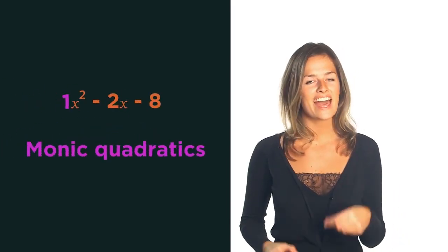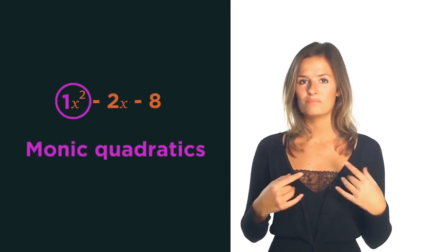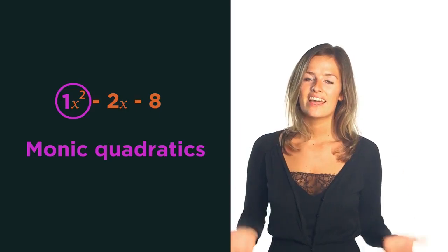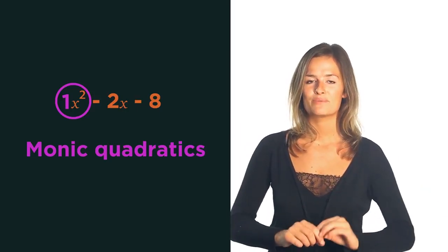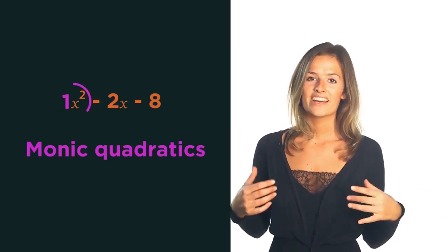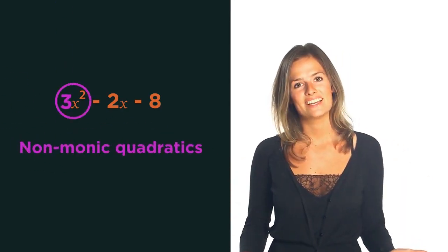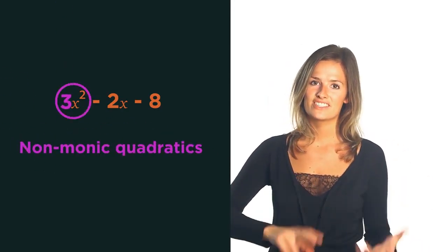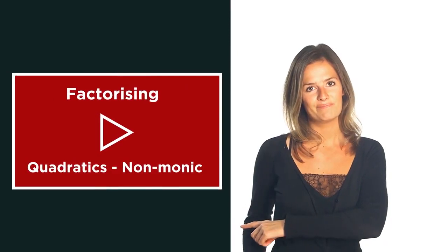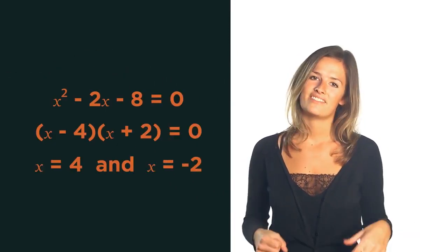So there we have factorising quadratics when the coefficient in front of the x squared is one. These are called Monic Quadratics. If the coefficient in front of the x squared isn't one, they're called non-monic quadratics. And we'll discover how to factorise those in another video. We'll also discover how to solve quadratics in another video.